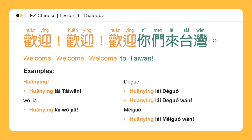Examples: 欢迎来台湾。我家 — 欢迎来我家。德国 — 欢迎来德国。欢迎来德国玩。美国 — 欢迎来美国玩。